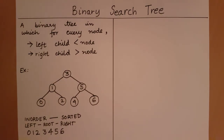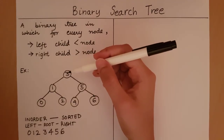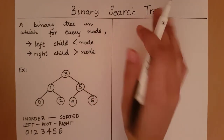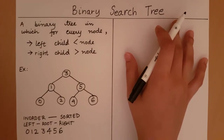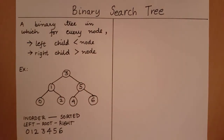Another important property of a binary search tree is that it is easy to search for elements. Suppose I want to search for element two — I start at the root and decide whether to search in the left or right subtree of three. Since two is less than three, I search in the left subtree, minimizing my range of search.